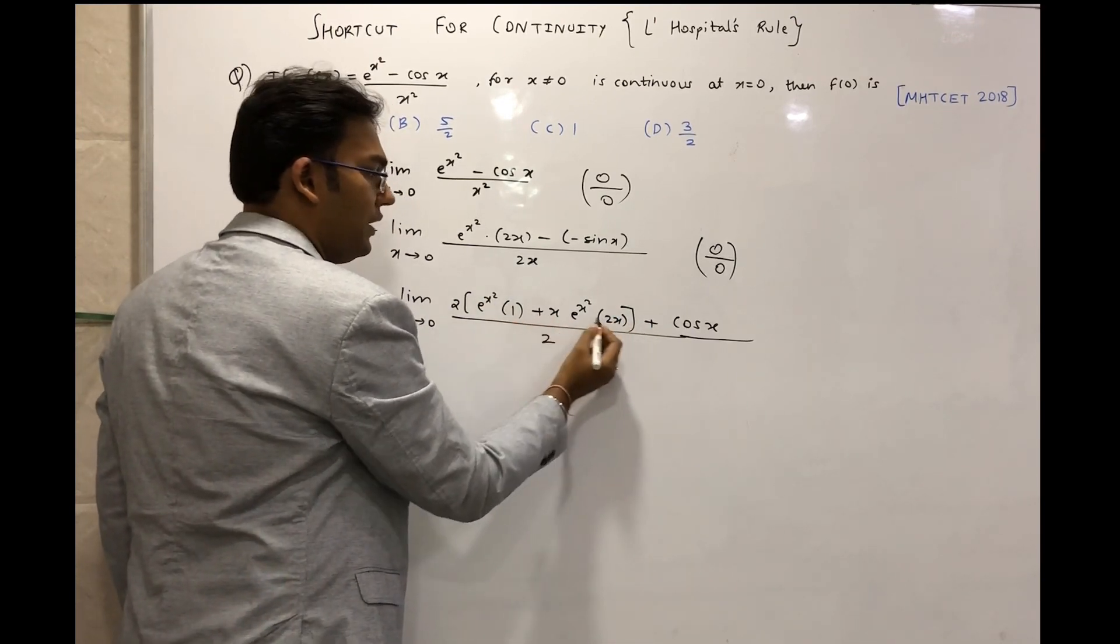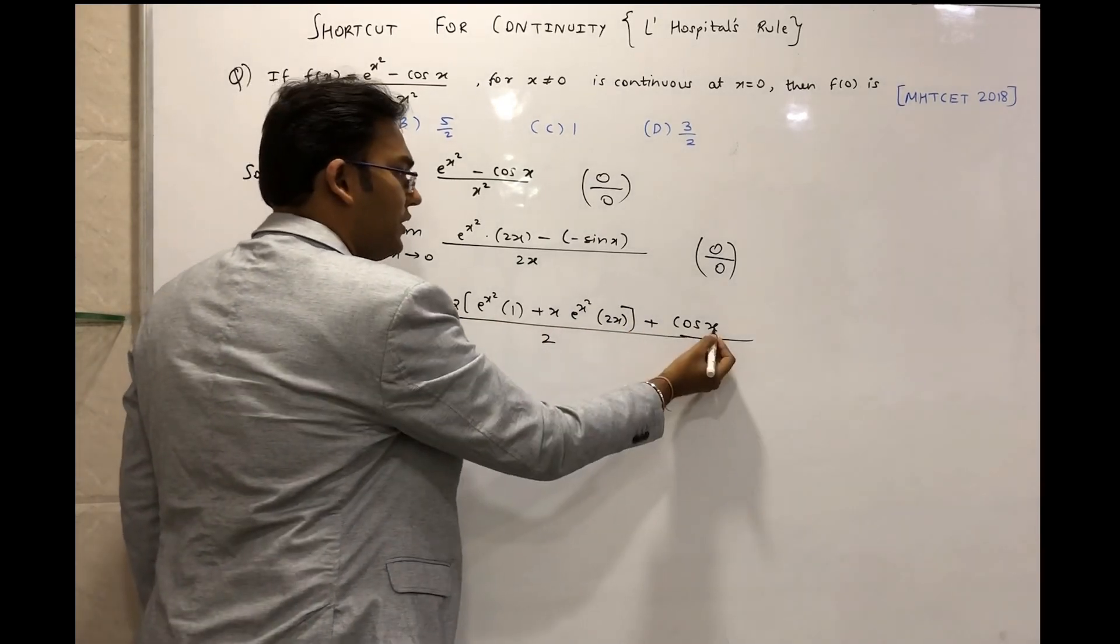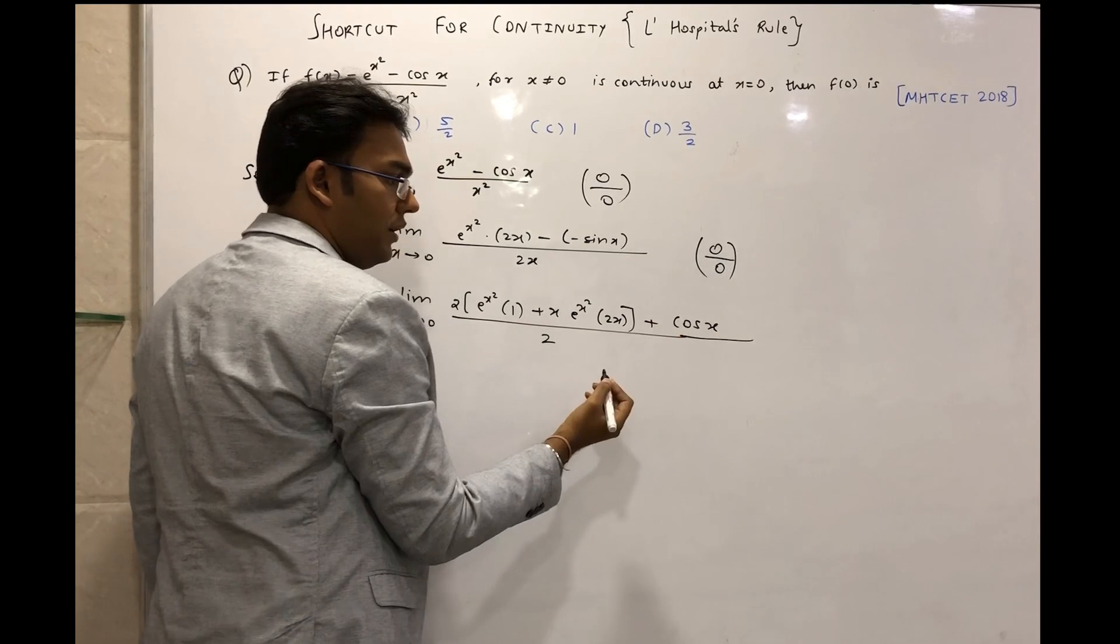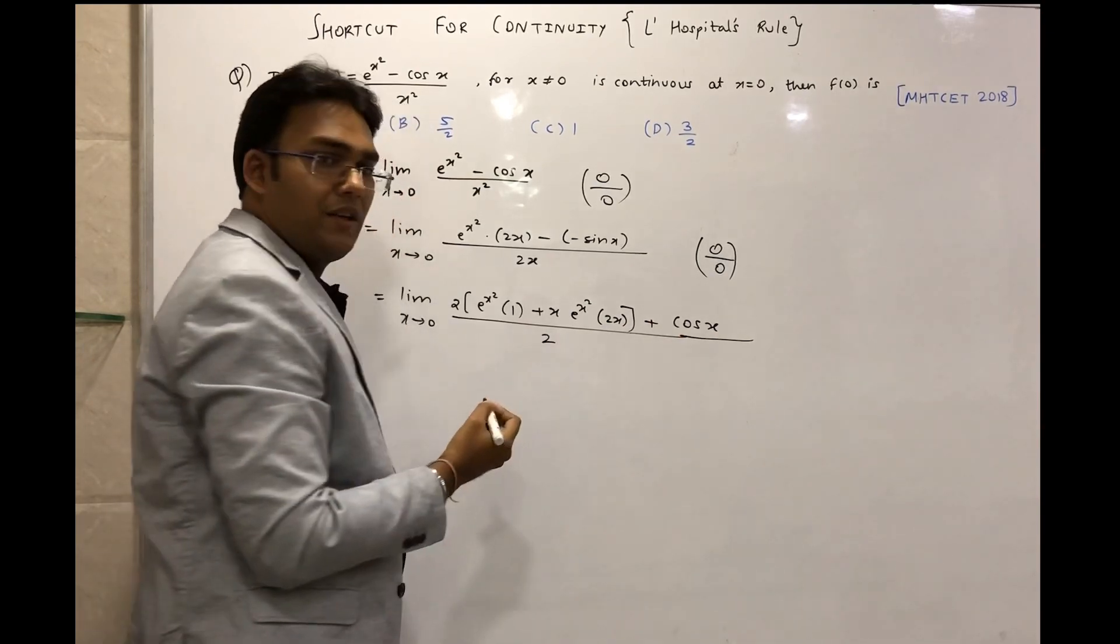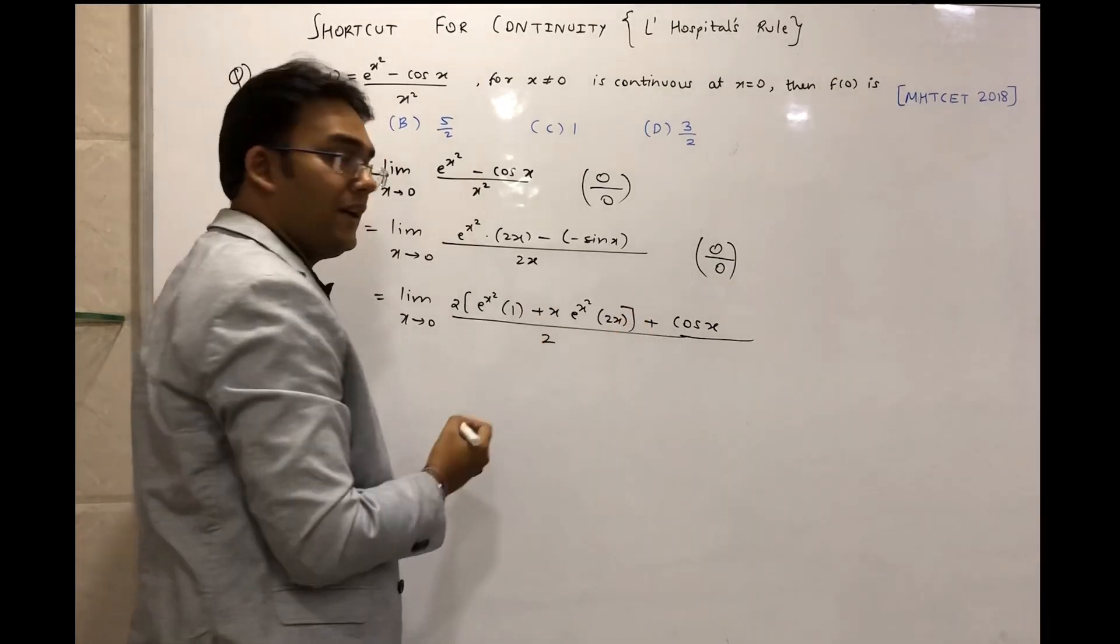So this is 2 times 1 which is 2, plus if we substitute 0 here cos 0 is 1, and there is no x in the denominator. That means we are getting an answer after substituting x = 0.